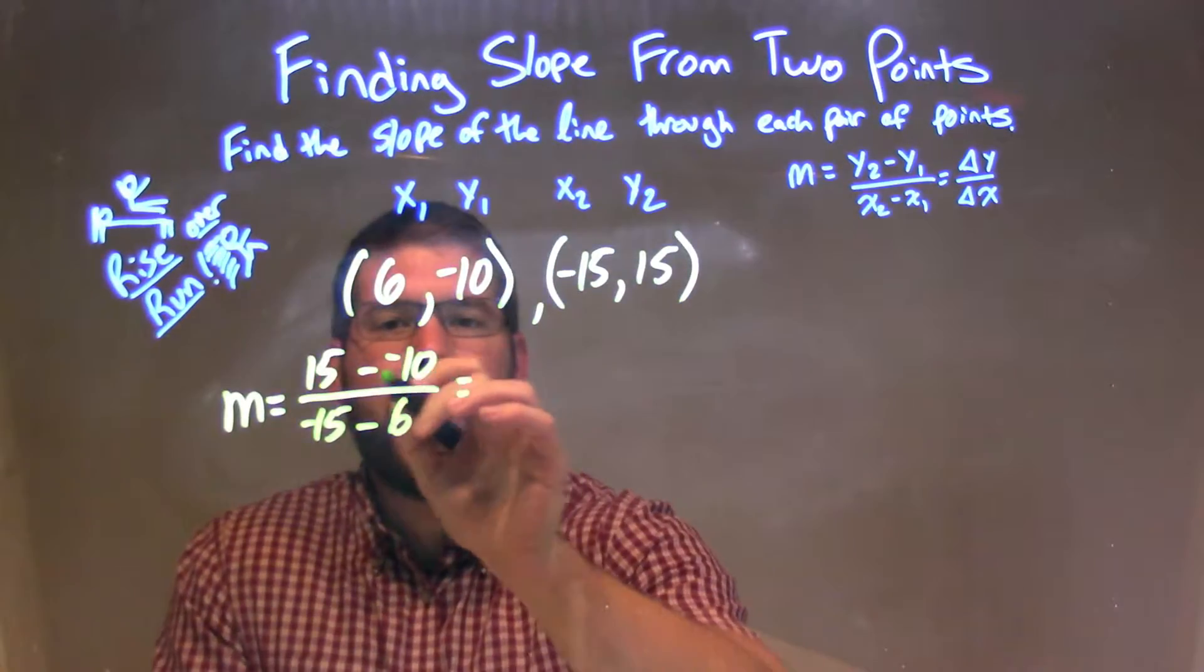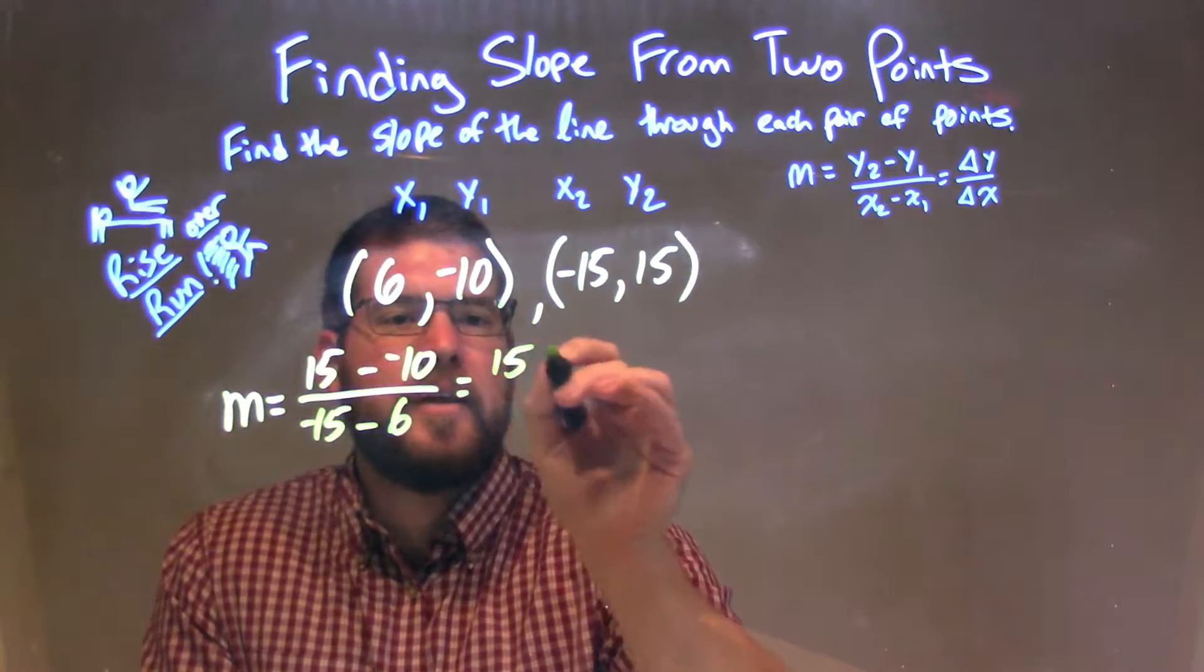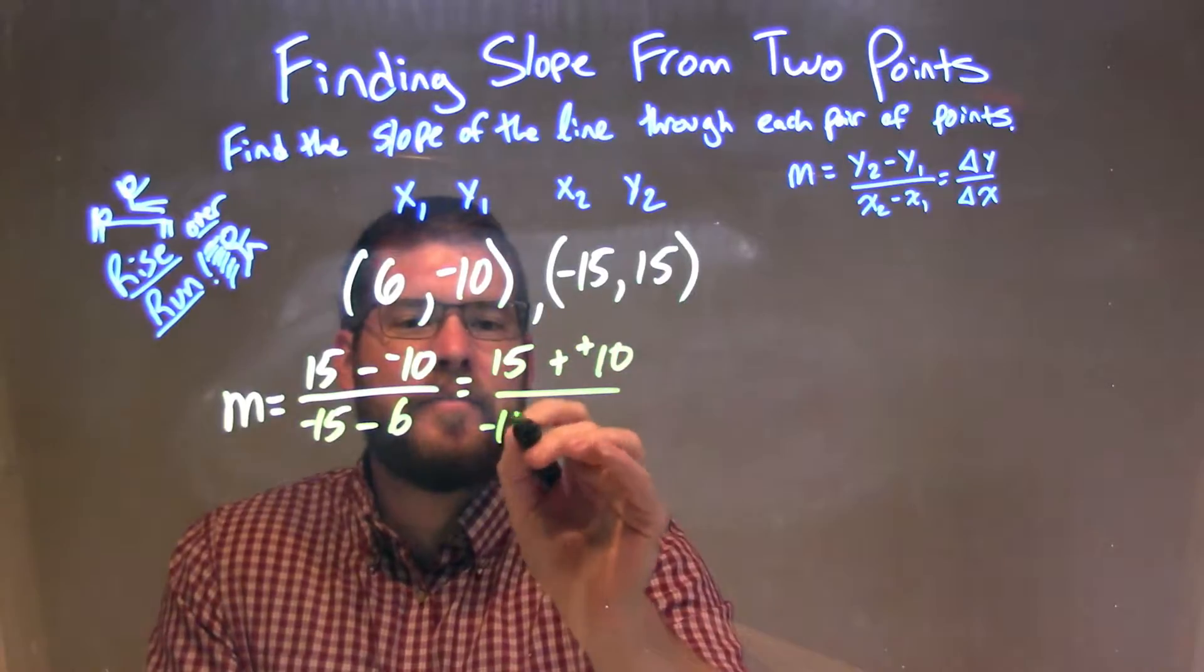Well, let's simplify that. We have minus a negative plus a positive, so we have 15 plus a positive 10, over negative 15.